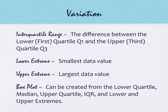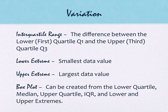The interquartile range is the difference between Q3 and Q1. The range goes from the tallest to the shortest, while the interquartile range covers just that inner piece between Q1 and Q3 - trapping 50% of the values. The lower extreme is the smallest value, and the upper extreme is the largest. All of this information goes into a specific type of graph called a box plot, sometimes called a box and whisker plot.